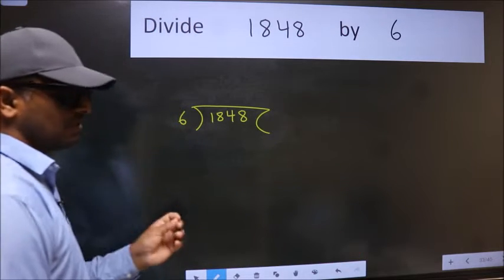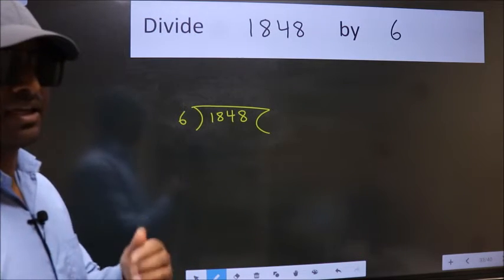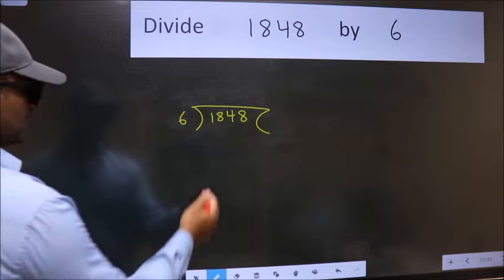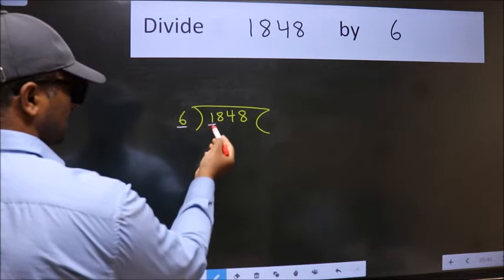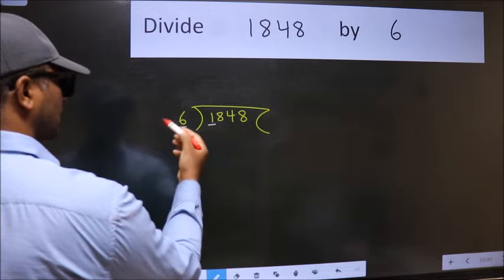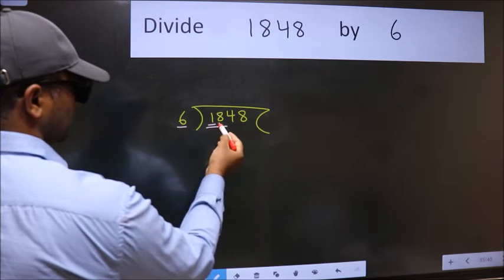This is your step 1. Next. Here we have 1 and here 6. 1 is smaller than 6, so we should take two numbers: 18.